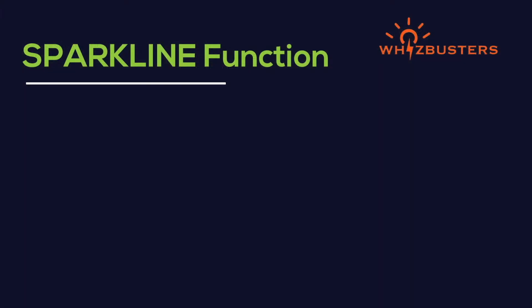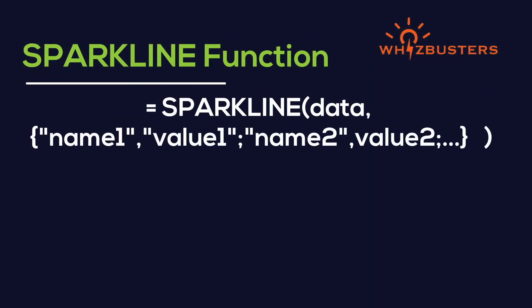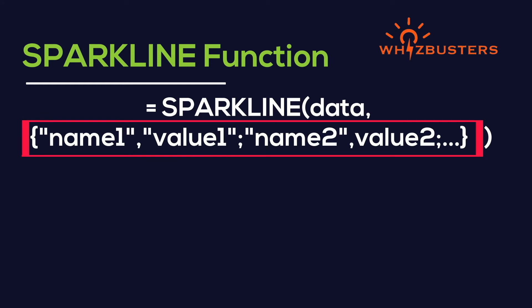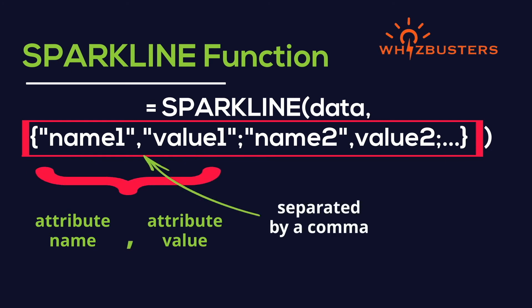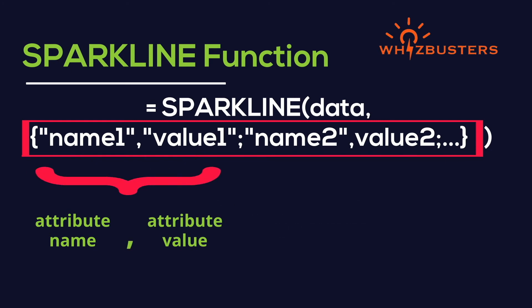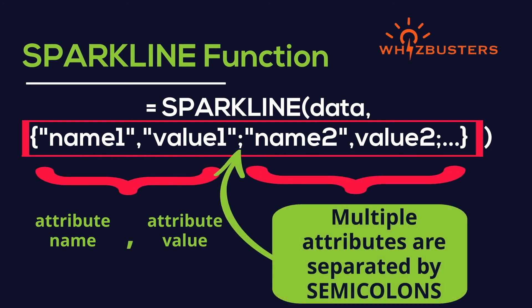The syntax when using the second parameter is: when defining the attribute, we need to have the attribute name and the value for the attribute in a pair separated by a comma. Multiple attributes are separated by semicolons.